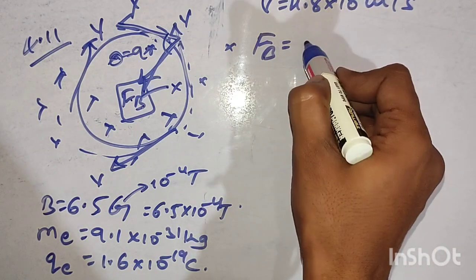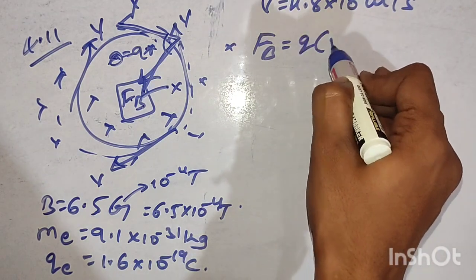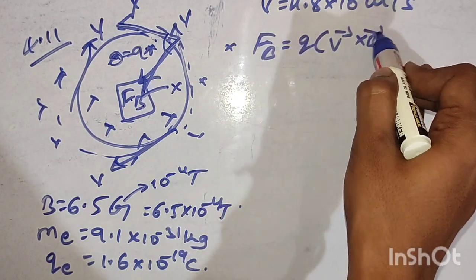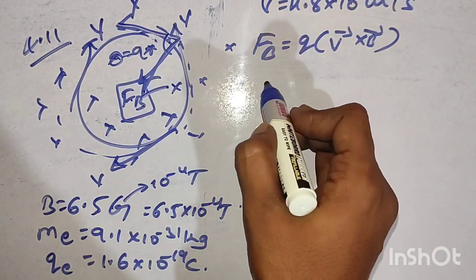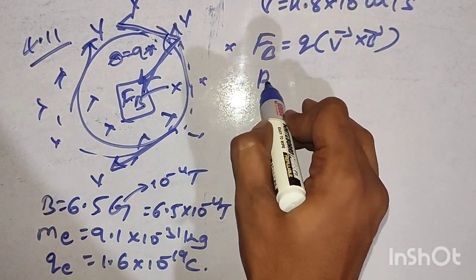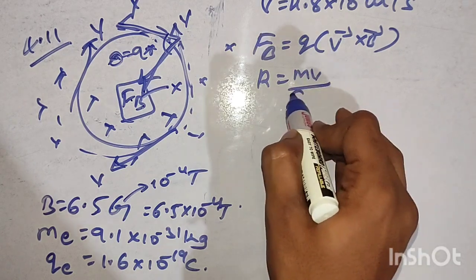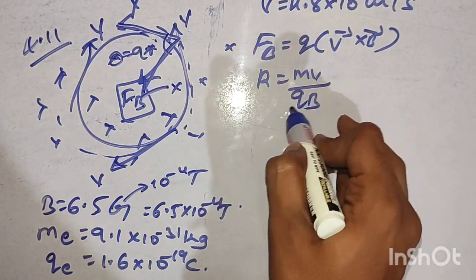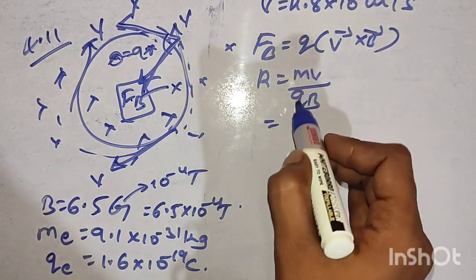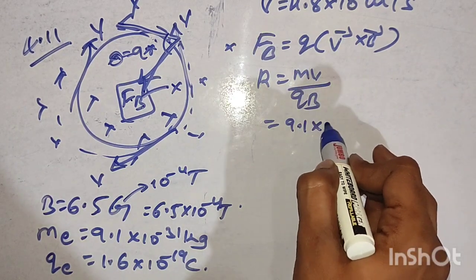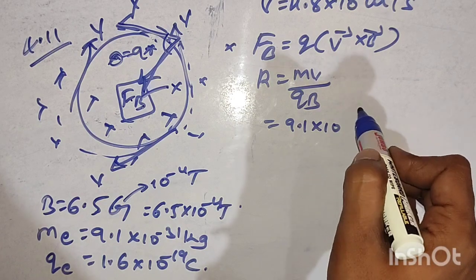Force in magnetic field is F = Q into V into B. So, here R is equal to MV divided by QB.